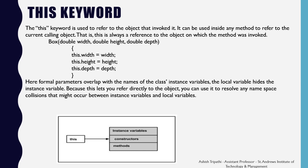For example, we are writing the constructor of a class Box having three parameters: width, height, and depth. These three are also the variable names of the Box class. So to differentiate them, we use the this keyword before the left side of the assignment operator. Here, this.width is the member of the class Box and the right-side width is the parameter value. The formal parameters overlap with the name of the class instance variable, and this lets you resolve any namespace collisions between instance variables and local variables. In the figure, you can see the this keyword pointing to the instance variable, constructors, and member methods of the class.